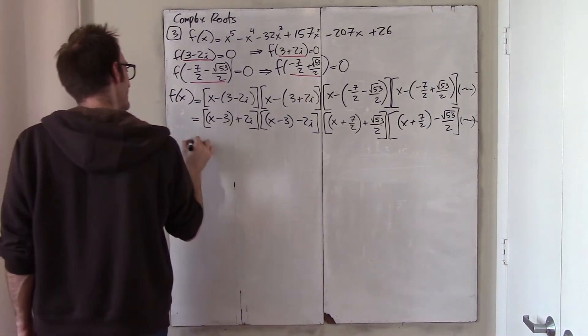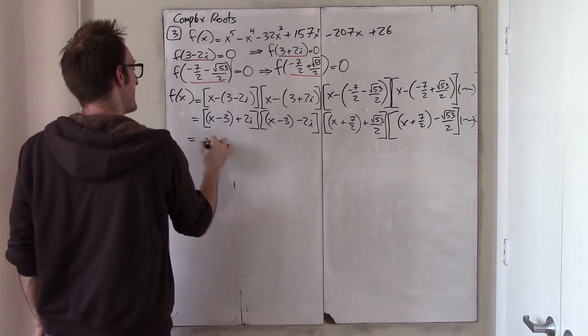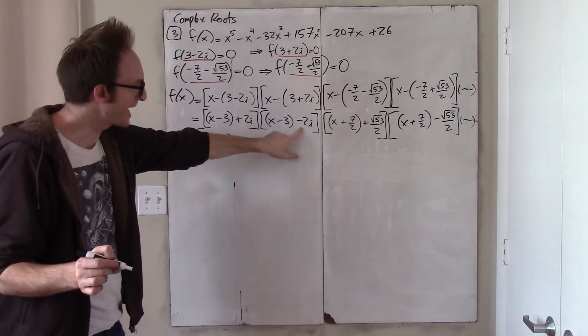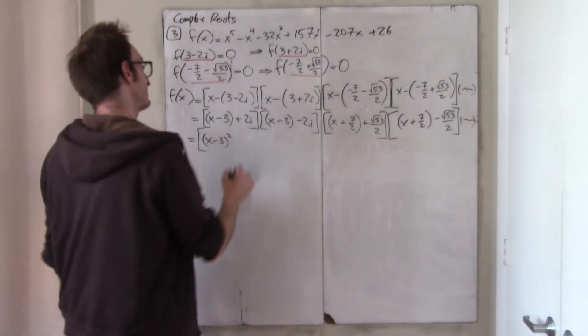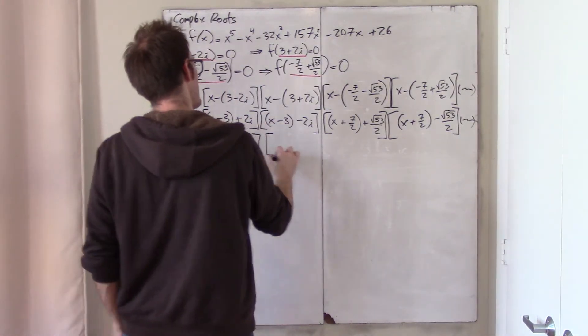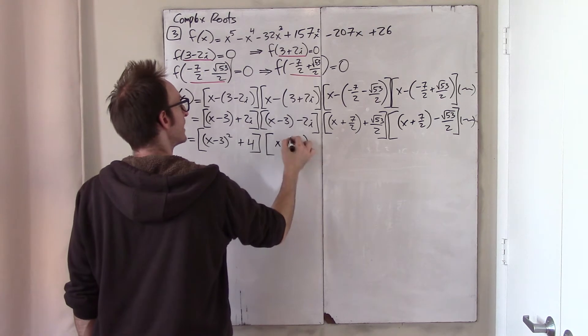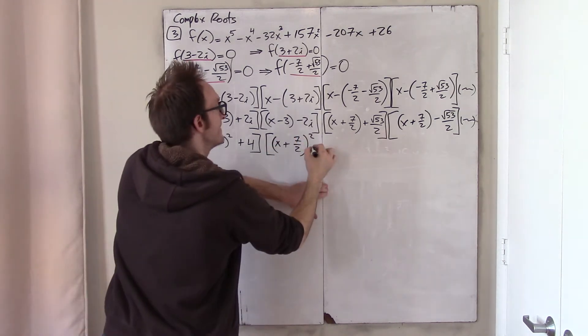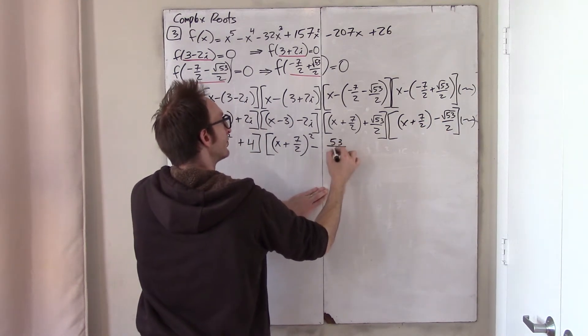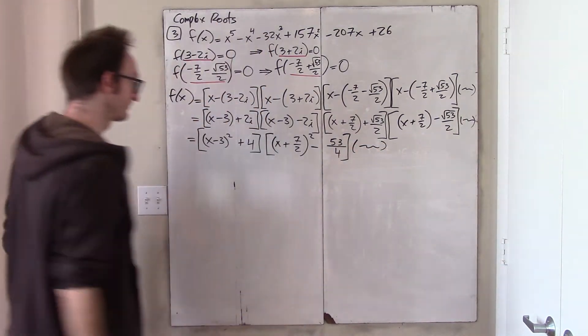Okay, now let's multiply these together because they're in the difference of squares format. So, this gives me (x minus 3) squared. When I multiply 2i times negative 2i, I get negative 4i squared. So, that just becomes plus 4. And when I multiply these two, what do I get? Well, this is also in the difference of squares format. So, I get (x plus 7 halves) quantity squared. And then, minus (root 53 over 2) times negative (root 53 over 2) is minus 53 over 4. Times some leftover stuff.